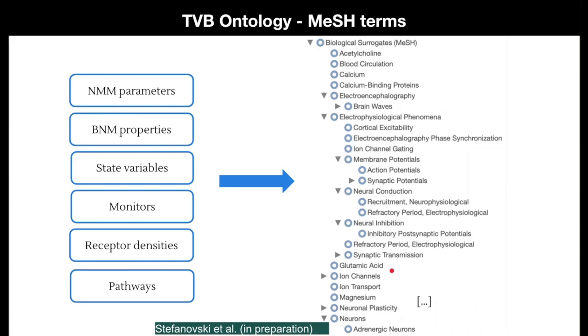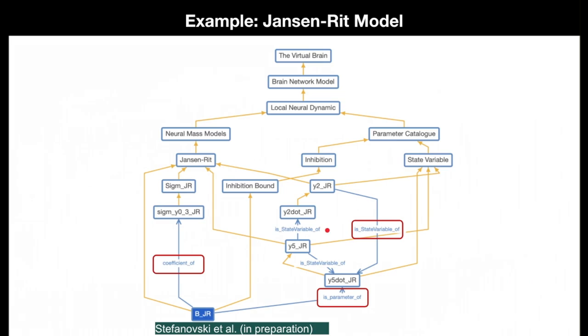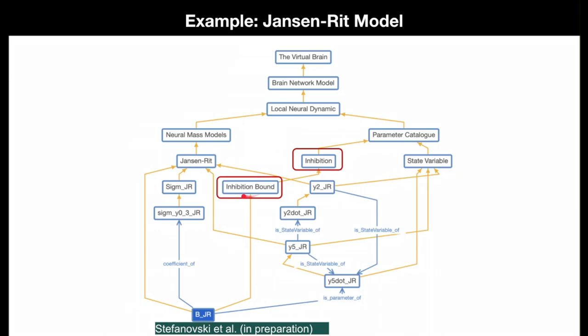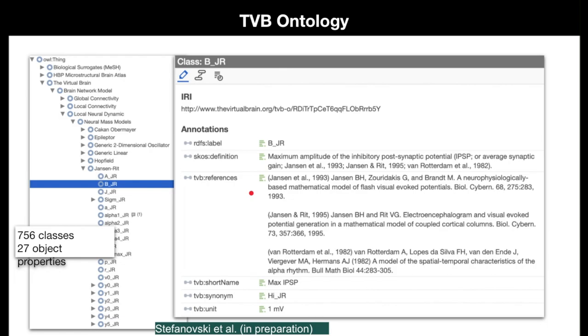Here you get an impression of the terminologies used in the TVB ontologies. This is one parameter from the Jansen-Rit model, with its interconnections to other parameters, variables, and annotations. You get property categories, information about the relations between elements, and about their biological meaning. This can be directly mapped to the existing MeSH terms of existing pathway inventories.